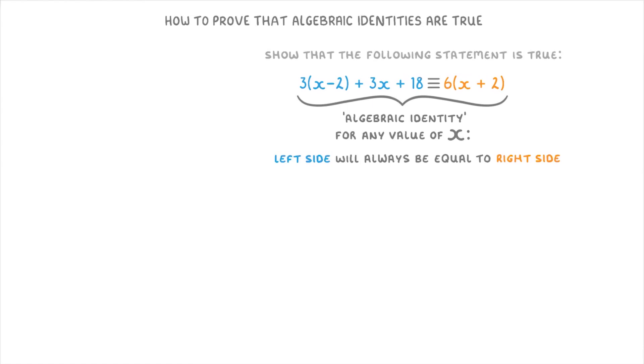You can normally tell when an equation is an algebraic identity like this because instead of having an equal sign in the middle, it will have this symbol instead, which has three lines instead of two, and we call this an identity symbol.